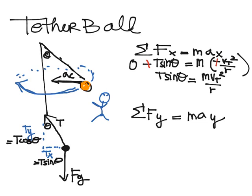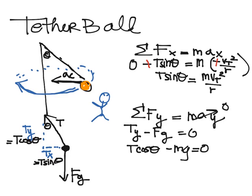In the y direction I have two forces: T cos theta or Ty up minus Fg down, and it's not moving up and down so ay has to equal 0. I'm going to plug in T times cosine theta minus mg equals 0, and I can solve for T cosine theta equals mg.